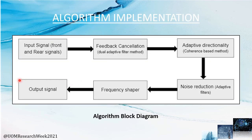Moving on to the algorithm implementation. In this block diagram, you can see the two input signals from front and back omnidirectional microphones. We use a dual adaptive filter method as our feedback cancellation method. After that, we use adaptive directionality to further enhance the input signal. Since we are using two microphones, the adaptive directionality method improves the signal by reducing noise. We also used an adaptive filter method for further noise reduction. After the noise reduction stage, we adjust the gain of the signal using a frequency shaper, and eventually deliver the output signal.